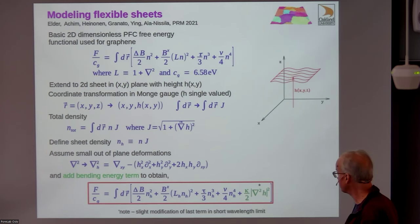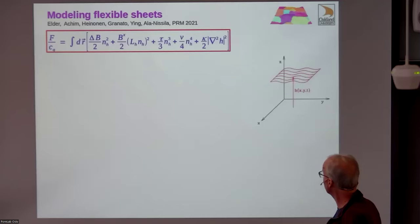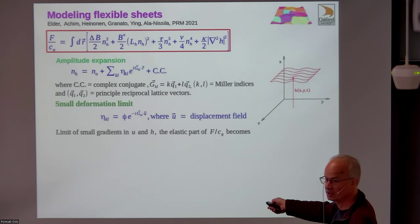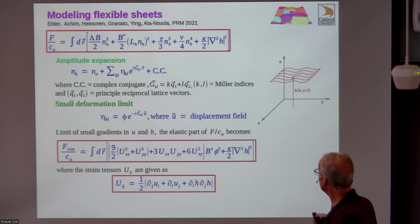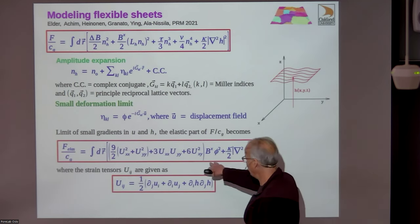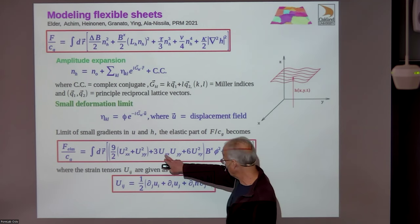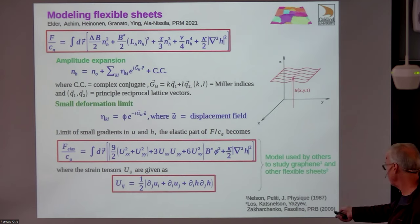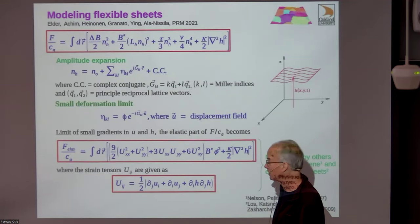Does this model reduce to the proper continuum limit? In the small deformation limit, when we calculate the elastic energy with this extra height field, we recover exactly the same elastic energy with an extra term in the stress fields. This is exactly the free energy used in studies of flexible sheets and graphene. So when there are no dislocations, we recover what others have used in the field.